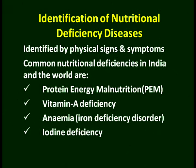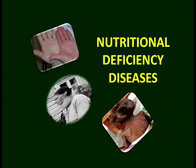So you have learned two major methods — body measurements and dietary intake. Now we will go to the third method of assessing nutritional status: identification of nutritional deficiency diseases through physical signs and symptoms. The common ones are protein energy malnutrition, vitamin A deficiency, anemia due to iron deficiency, and iodine deficiency disorder. These four are common not only in our country but in various corners of the world.